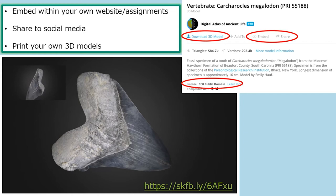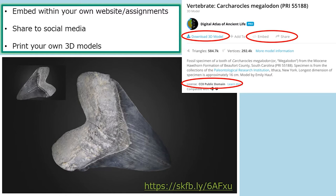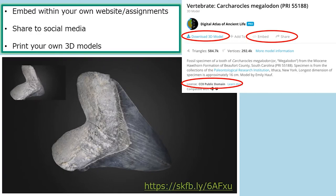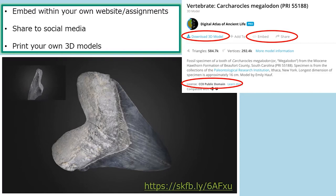All of our models are under Creative Commons public domain licensing, meaning they're 100% free and accessible for anyone to use. You can click on any 3D model and download the 3D image files — so if you have access to a 3D printer, you can print a specimen for your class or your own research. There are also embed and share links with each model: you can copy the HTML code and embed it as a video file in your own websites or assignments, and share these to social media or with your courses however you see fit.